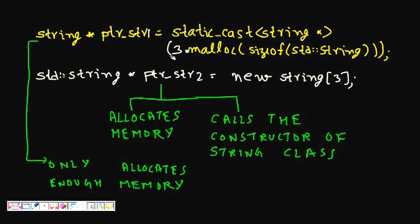If I write it in a C style, I will do static_cast<string*> and then 3 * malloc(sizeof(std::string)). This is the general way - I'm type casting it to string star using static_cast, then three is the size. This array size I am taking as three, so I use 3 * malloc(sizeof(std::string)). This is the particular way we write malloc in C.